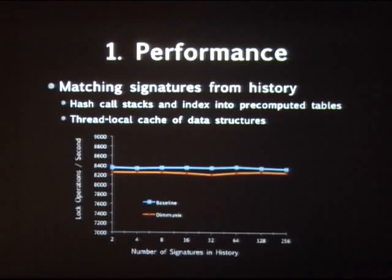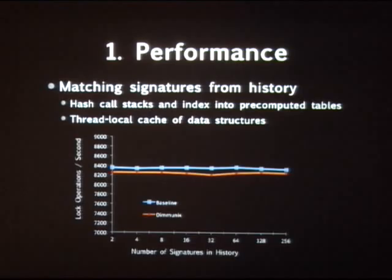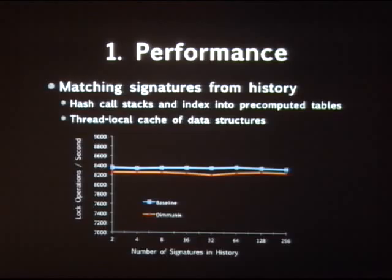We also wanted to see what happens as the history varies in size. We ran the same microbenchmark and varied the number of signatures from 2 to 256. The good news is that the overhead stays relatively flat — not surprising given the O(1) implementation. I should point out that having 256 signatures is probably unrealistically large, as that means you have more than 200 deadlocks in your program. For today's systems we're probably looking at something much lower, but we have margin for expansion.